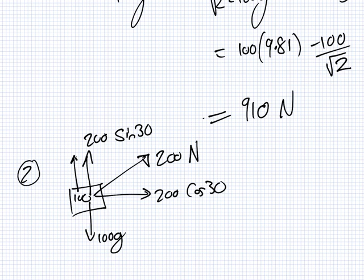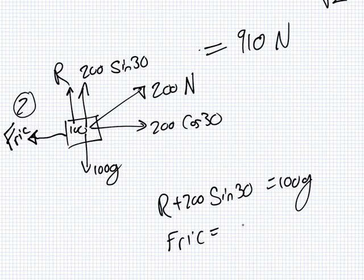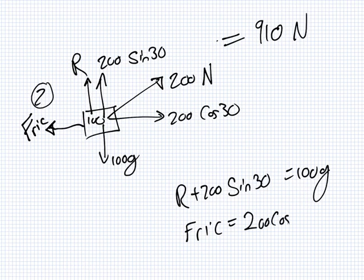So we have now reaction force going up. And what else do I leave out here? There's one other force. Friction. Right, so now we have R plus 200 sine 30 equals 100 G. But I don't... Do I need the R in this question? Or do I just ask for the friction? It's going for the friction.